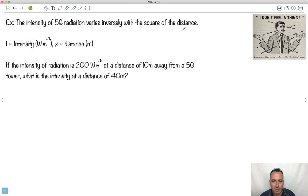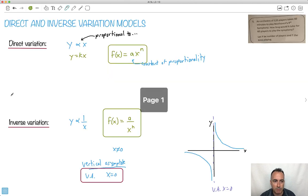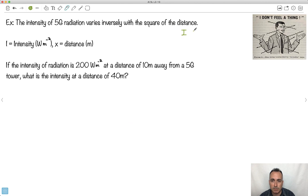And light behaves the same way, at least as far as its intensity. The intensity of 5G radiation varies inversely with the square of the distance. What does that really mean? Let's first of all just take that piece of information. The intensity, which is I, if it varies inversely, that will be proportional to 1 over the distance x squared.